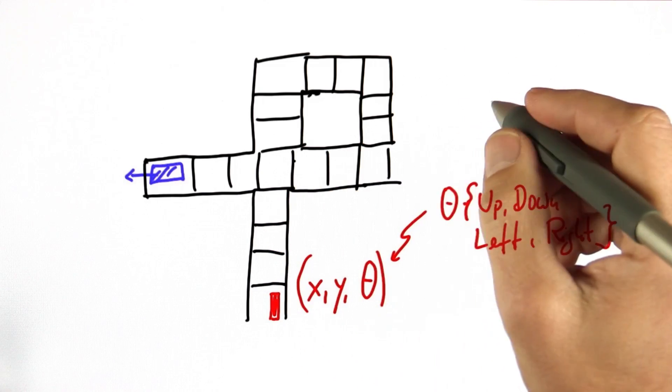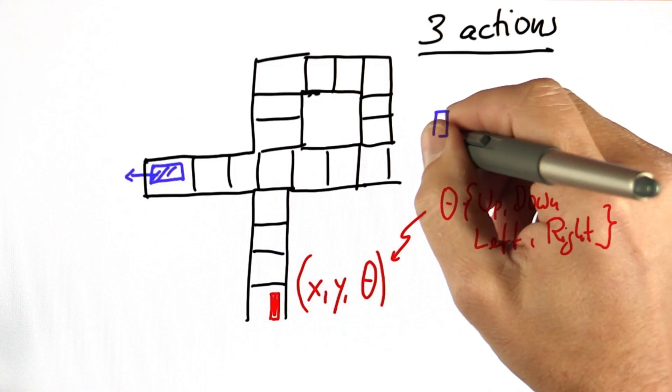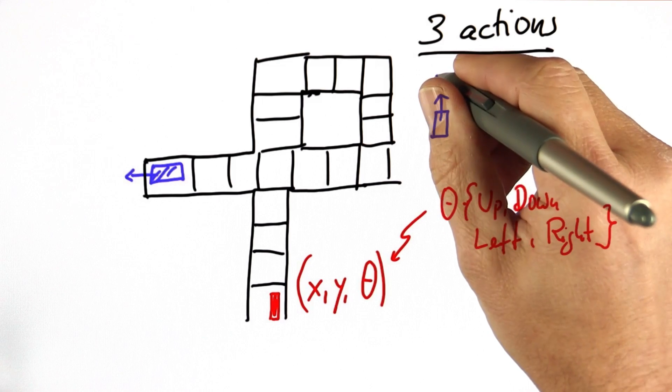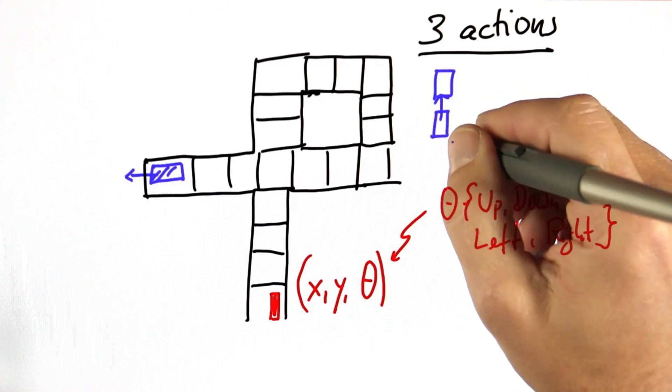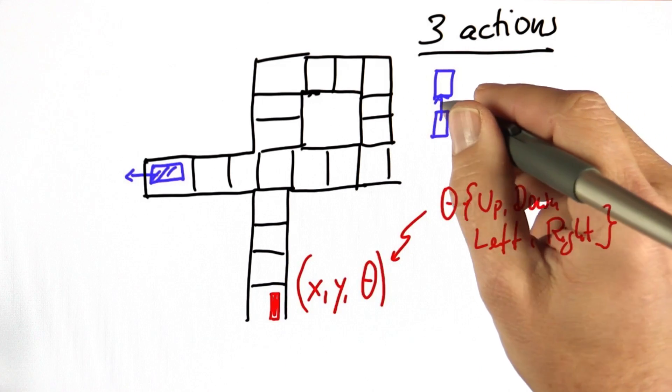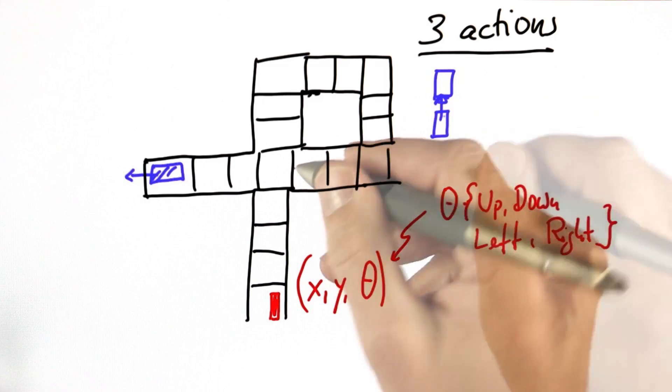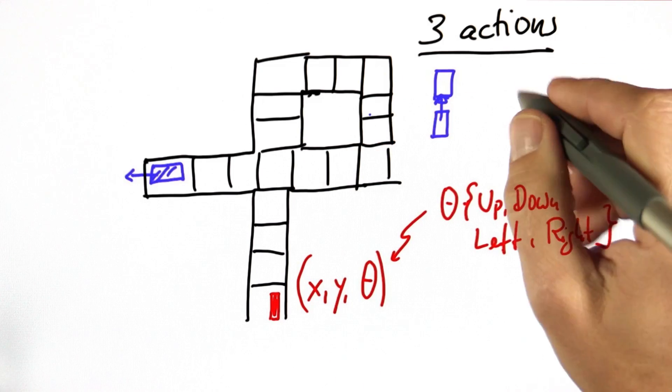So there's three principal actions. One is move, in which the car just goes one grid cell forward in its present orientation. It doesn't turn at all. That could be applied anywhere in the maze, in any direction.